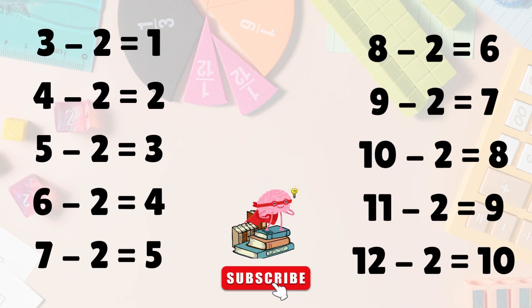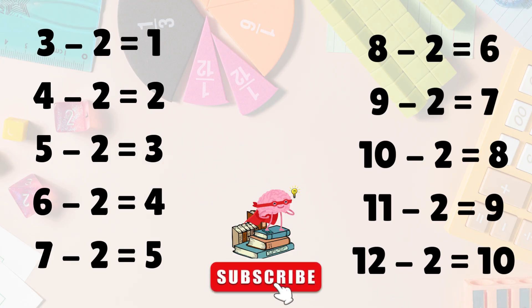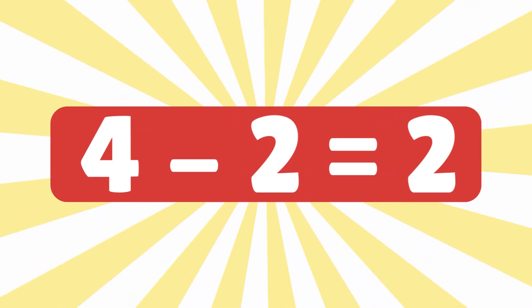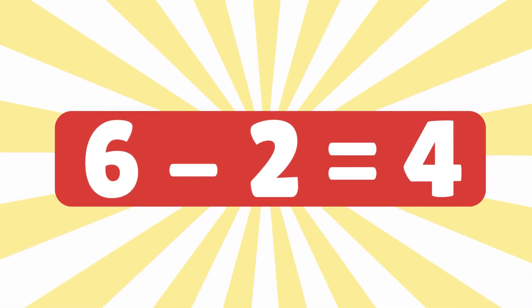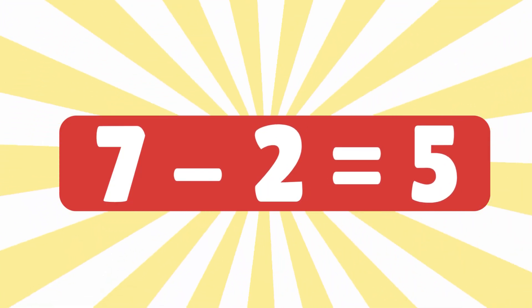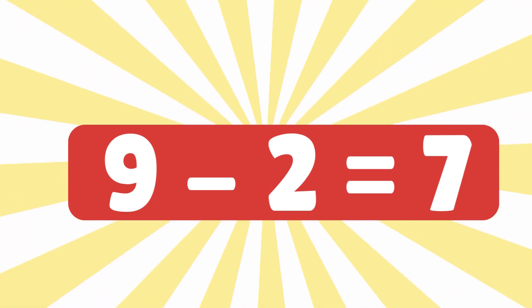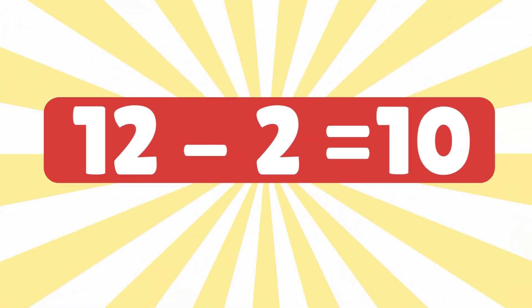Party popper! Great job, kids — you just learned the subtraction table of 2, from 2 all the way to 12. Let's say it one more time together, super fast: 2 minus 2 is 0. 3 minus 2 is 1. 4 minus 2 is 2. 5 minus 2 is 3. 6 minus 2 is 4. 7 minus 2 is 5. 8 minus 2 is 6. 9 minus 2 is 7. 10 minus 2 is 8. 11 minus 2 is 9. 12 minus 2 is 10.